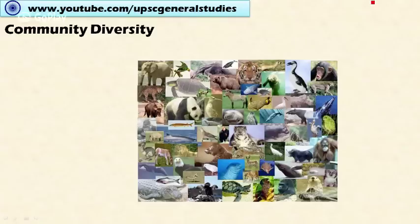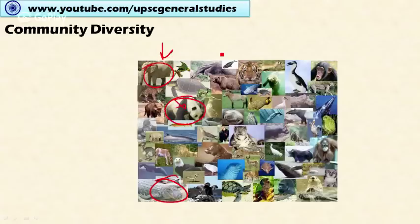The next level is community or ecosystem diversity. This diversity refers to the variability when comparing different ecosystems — for example, aquatic ecosystems compared to terrestrial ecosystems, or tropical ecosystems compared to temperate ecosystems. This community diversity refers to different types of habitats.